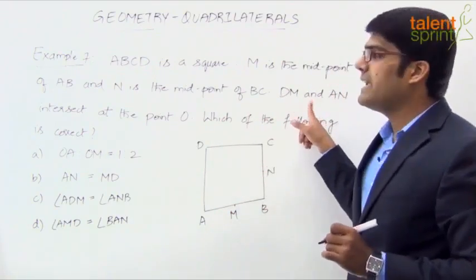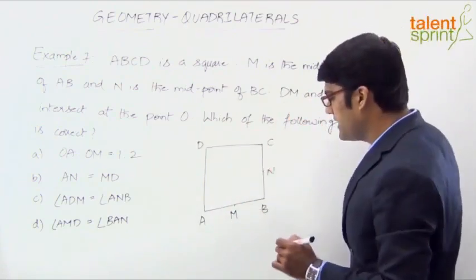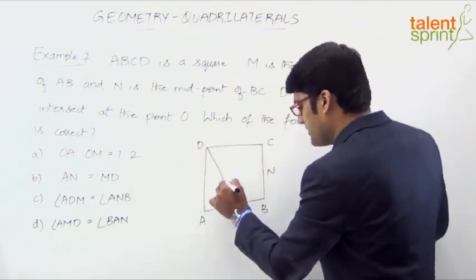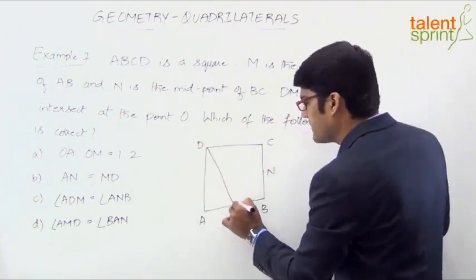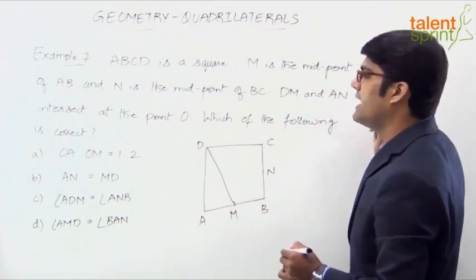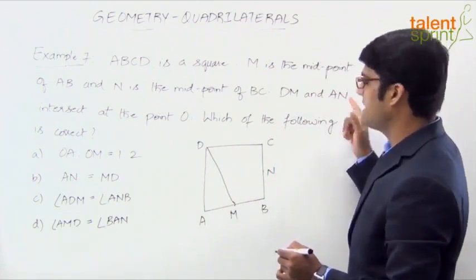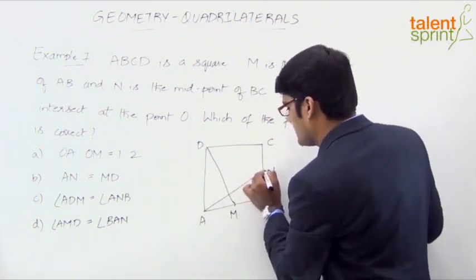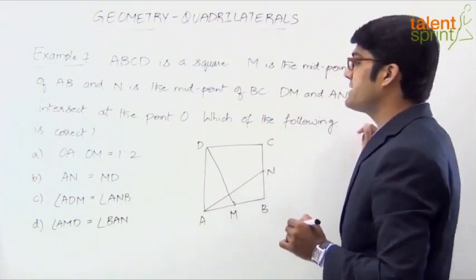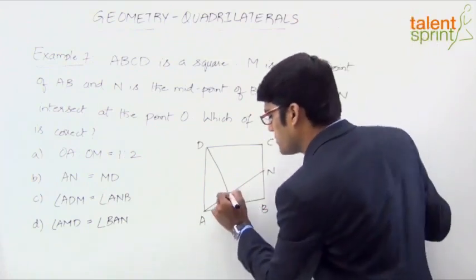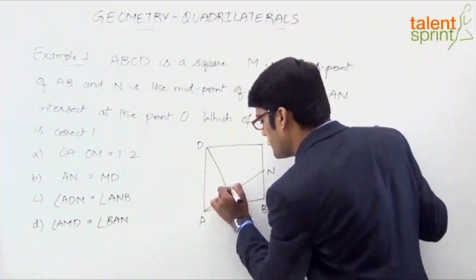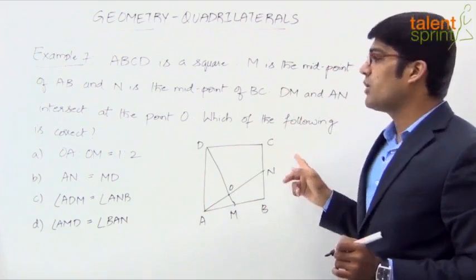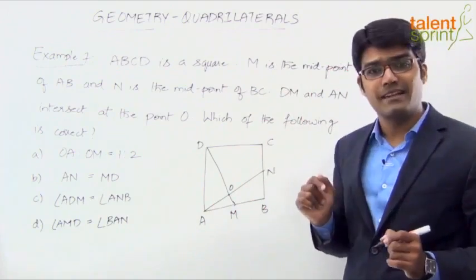DM and AN intersect at point O. So we draw DM — this line — and AN, the other line. These two intersect at the point O, which is our point of intersection.